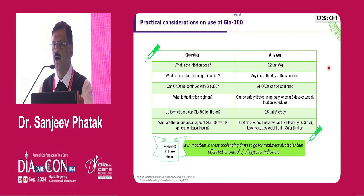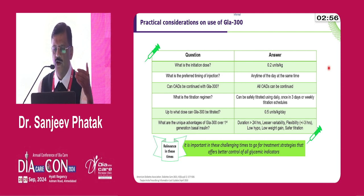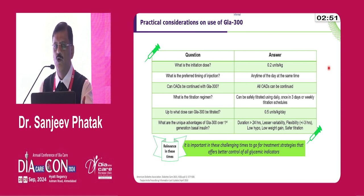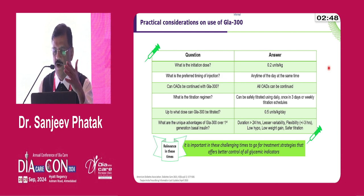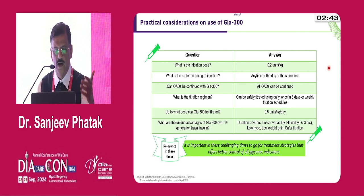The unique advantages of glargine U300 over the gold standard glargine U100 are: duration of action more than 24 hours, less variability, more flexibility, lower risk of hypoglycemia, lower risk of nocturnal hypoglycemia, and therefore lower weight gain. Safer titration leads to better control and better adherence.